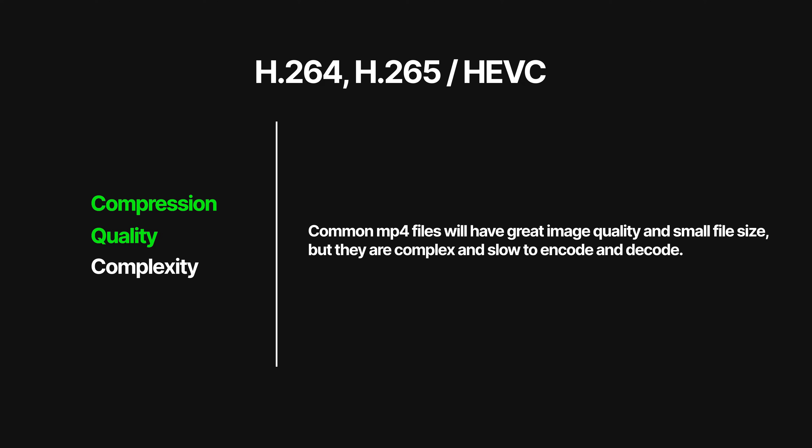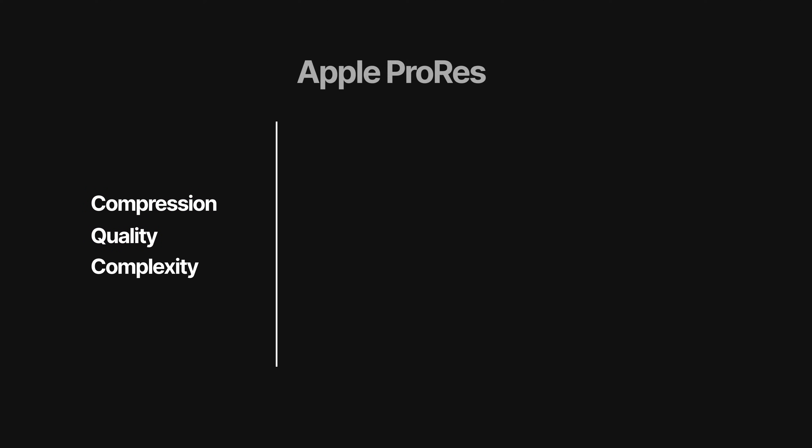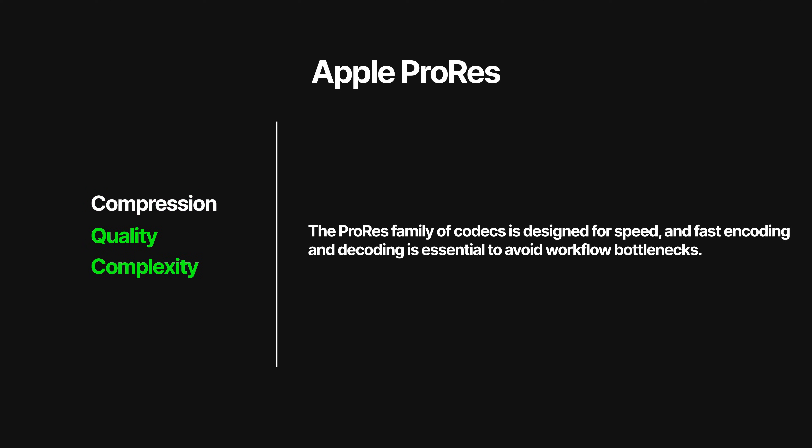You're probably fine editing smaller projects using these codecs, and modern computers are pretty well optimized for complex codecs like this. But in professional settings where resolutions and frame rates are high and you might be working with multiple streams of 4K video, low complexity becomes much more important. That's where Apple ProRes steps in — it offers great image quality at very low complexity, making it an efficient codec for video editing. The trade-off is compression, meaning these files will be significantly larger compared to standard MP4 files.